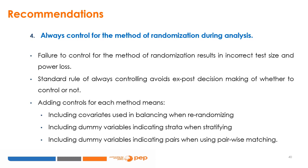Always control for the method of randomisation during analysis. Failure to control results in incorrect test size and power loss, and always controlling avoids questionable ex-post decision making about whether to control or not. For each method, this means including covariates used in balancing when re-randomising, including dummy variables indicating strata when stratifying, and including dummy variables indicating pairs when using pairwise matching.